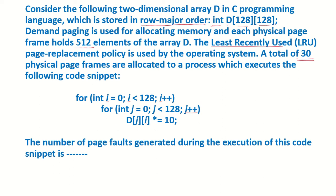A total of 30 physical page frames are allocated to a process which executes the following code snippet: for int i equals 0 to less than 128 i++, for int j equals 0 to j less than 128 j++.